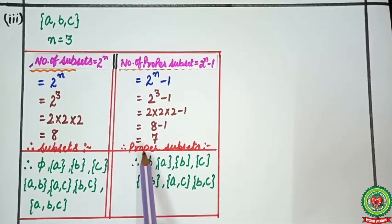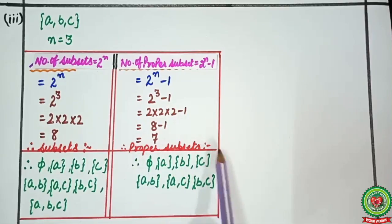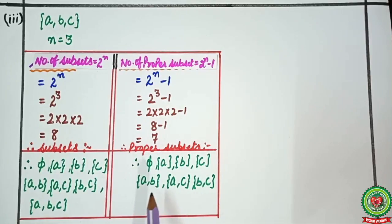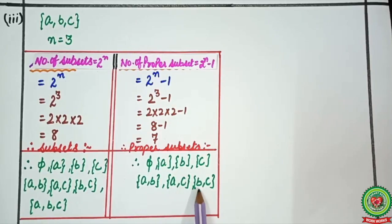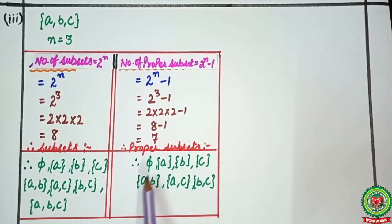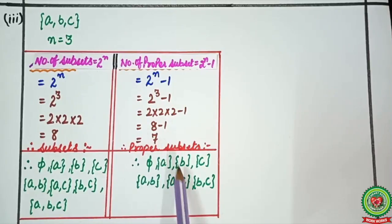Now for proper subsets: the simple trick is to write all the subsets except the set itself. So: ∅, {A}, {B}, {C}, {A,B}, {A,C}, {B,C}. Counting: 1, 2, 3, 4, 5, 6, 7. We have 7 proper subsets, as required.